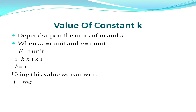The value of constant k depends upon the units of mass and acceleration. When m = 1 unit, a = 1 unit, and F = 1 unit, substituting into F = kma gives 1 = k × 1 × 1, so k = 1. Putting this value of k into the equation gives F = ma.